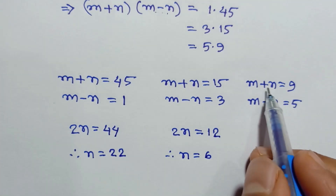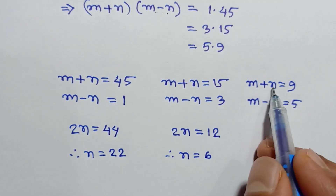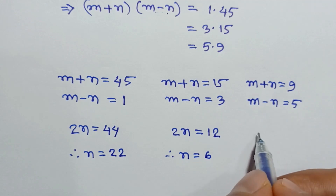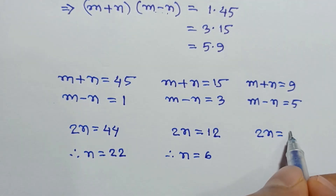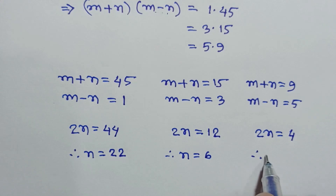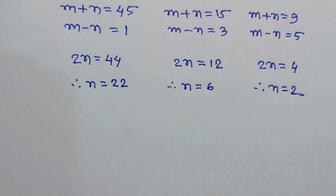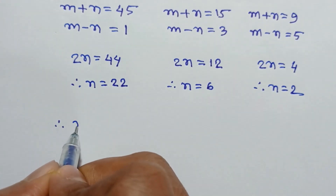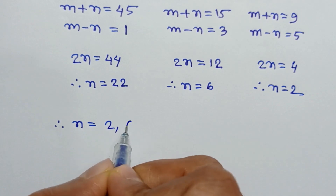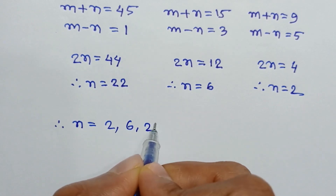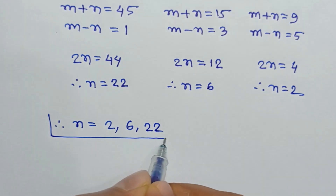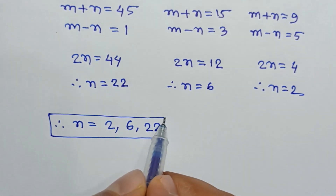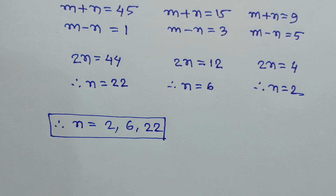And subtracting the third pair, 2n is equal to 9 minus 5, which is 4, so n is equal to 2. So we found the values of n are 2, 6, and 22 for which n squared plus 45 is a perfect square. If you like this video, please subscribe to my channel. Thanks for watching.